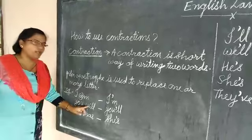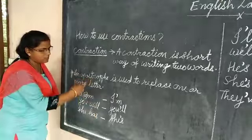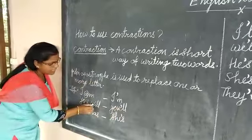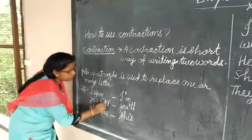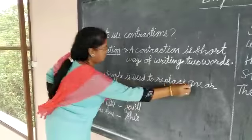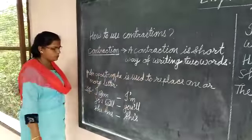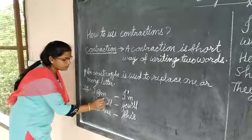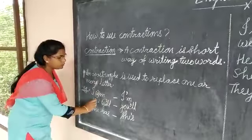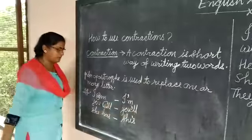Second example: 'you will.' Again, there are two words — 'you will.' The contraction form is 'you'll.' Here, two letters W and I are removed, and instead we place the punctuation mark apostrophe. So 'you will' becomes 'you'll' — the short form.